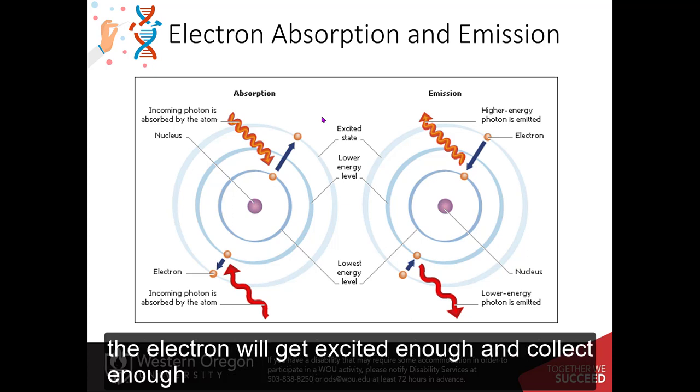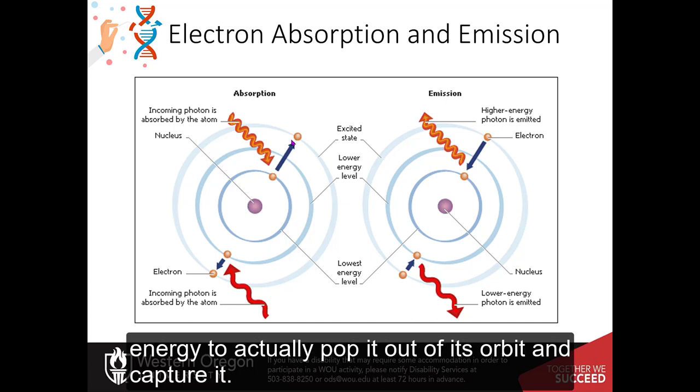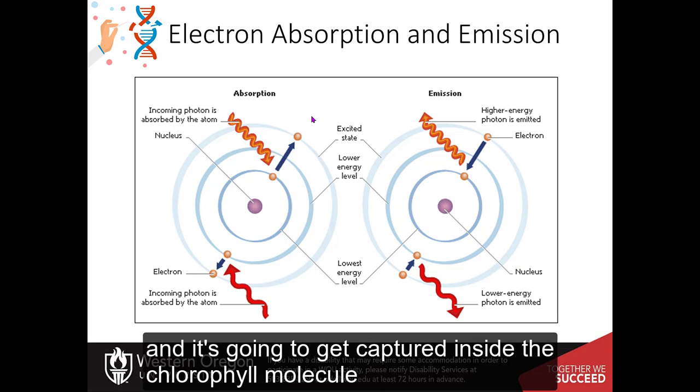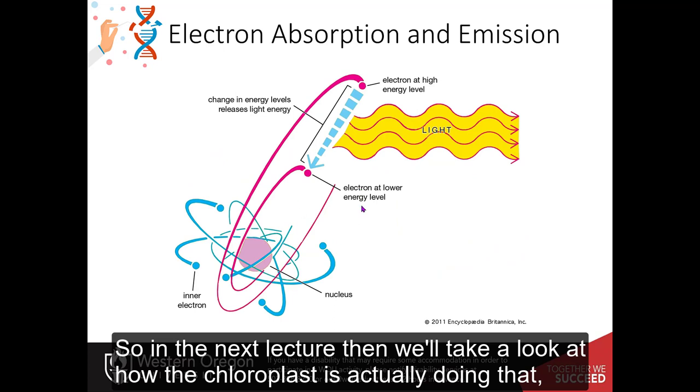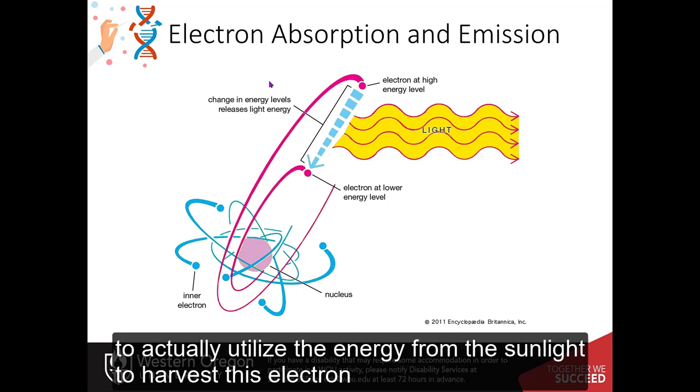The electron will get excited enough and collect enough energy to actually pop it out of its orbit and capture it. And it's going to get captured inside the chlorophyll molecule and be transported to a molecule of plastoquinone. So in the next lecture then, we'll take a look at how the chloroplast is actually doing that to actually utilize the energy from the sunlight to harvest those electrons. Thank you so much.